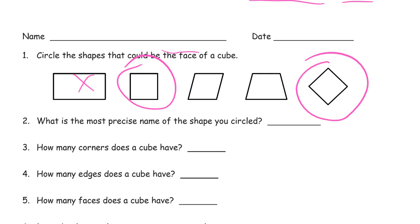What is the most precise name of the shape you circled? It's a square. Most precise, what we mean by that is, well, I mean...